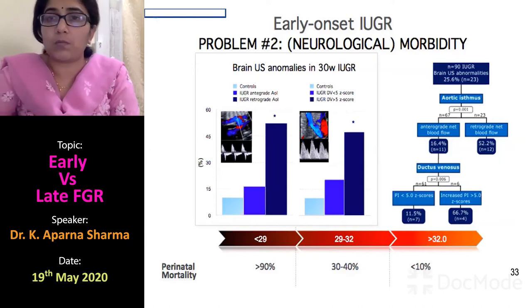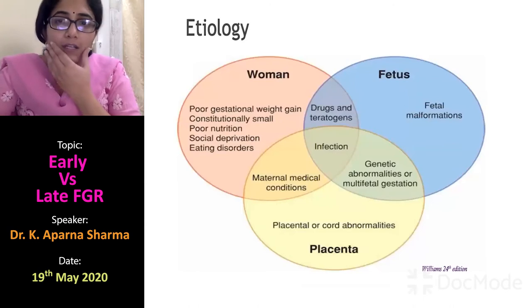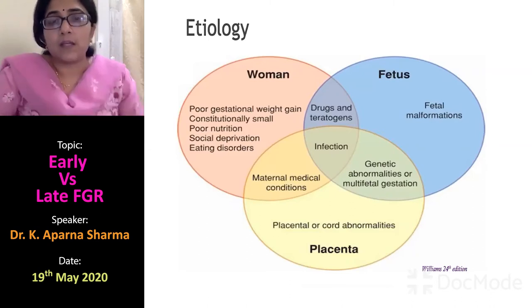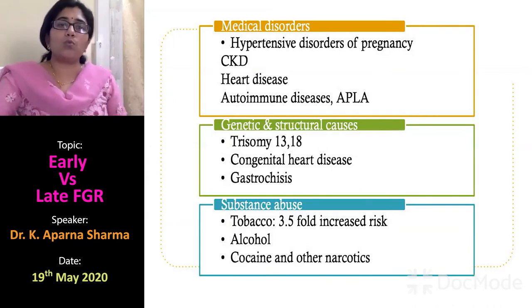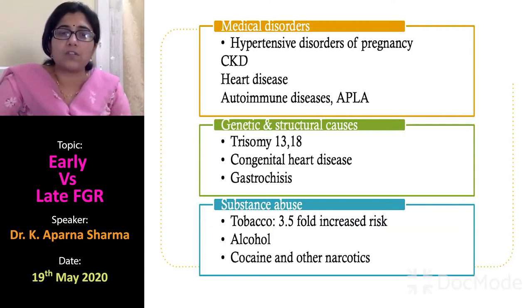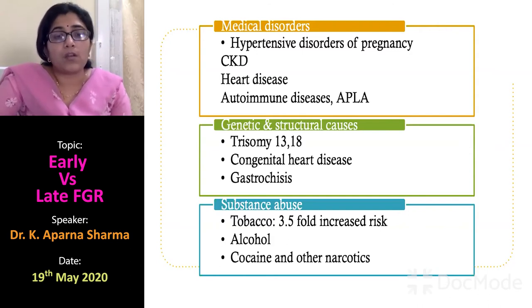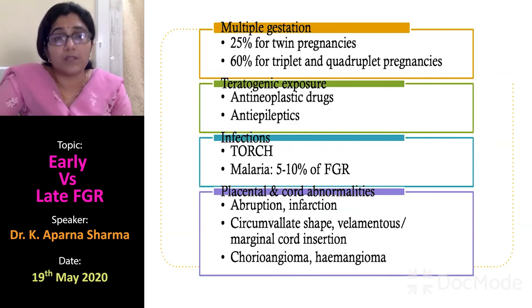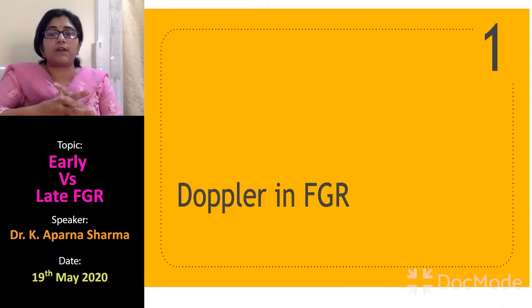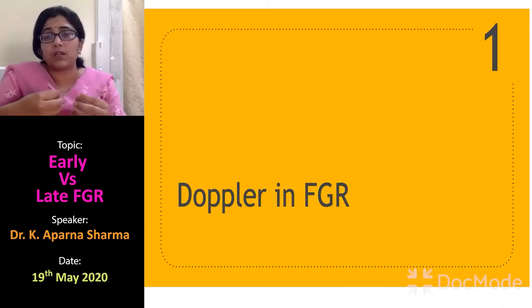A quick look at etiology: IUGR can arise from the mother, the fetus, or the placenta. Maternal causes include hypertensive disorders, chronic kidney disease, heart disease, substance abuse, or teratogen exposure. Fetal causes include congenital heart disease, aneuploidies, fetal infections, or multiple pregnancy. Placental and cord abnormalities are also included. These are the main etiological factors to consider.